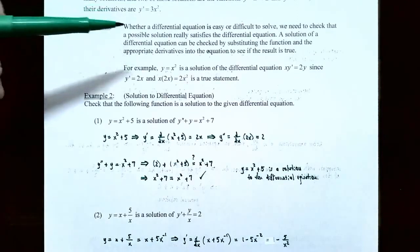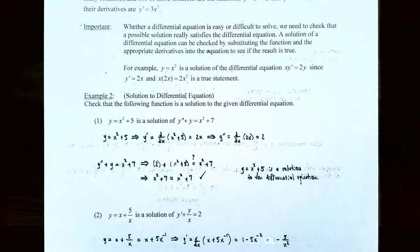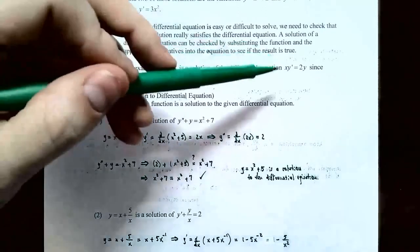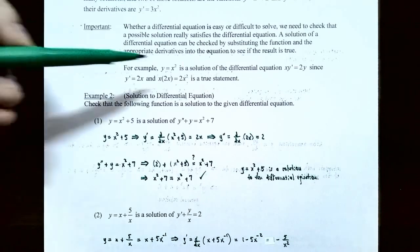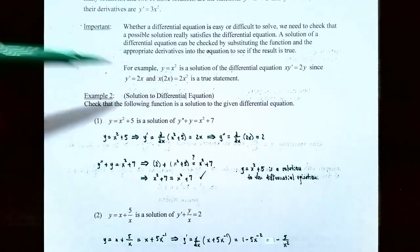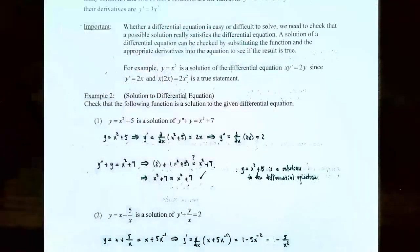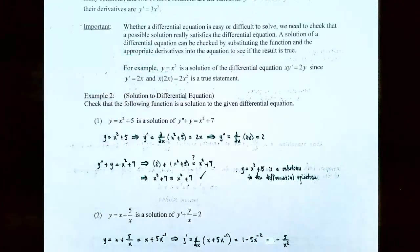What's important is that whether a differential equation is easy or difficult to solve, we need to check that the possible solution really satisfies it. A solution can be checked by substituting the function into the differential equation, taking the appropriate derivatives, and showing whether the equation is a true statement. For example, y equals x squared is a solution to x times y prime equals 2 times y, since y prime equals 2x, so x times 2x gives 2x squared on the left, and 2 times x squared gives 2x squared on the right — a true statement. When checking solutions, you plug in functions, not real numbers.